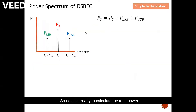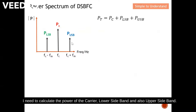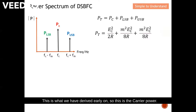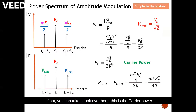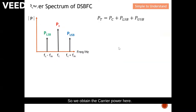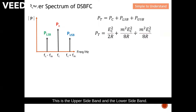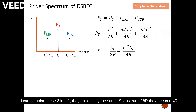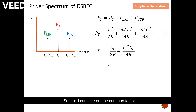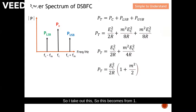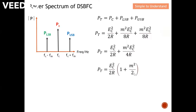For double sideband full carrier, the total power is the carrier power plus the lower sideband power plus the upper sideband power. The carrier power is Ec² / 2R. Since the upper and lower sideband powers are exactly the same, we can combine them: instead of dividing by 8R each, we get m²Ec² / 4R total. Taking out the common factor Ec² / 2R, we are left with m² / 2 for the combined sideband contribution.